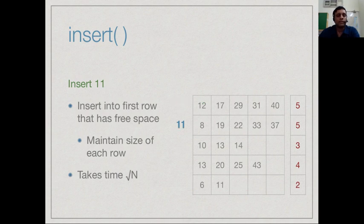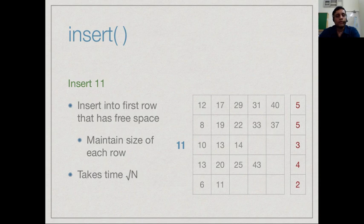Then we move to the next row. Once again we see that the size is 5, so then we go to the third row and now we see that there is a space because there are only 3 elements in this row and it can take 5. Now we walk down this list and find the correct place to insert it and insert it as we do in insertion sort.